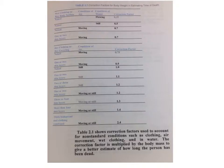In addition to the nomograph, we must also have a correlation table for body weight and estimations of time of death. This shows correlation factors used to account for non-standard conditions, such as clothing, air movement, or wet clothing and water. The correlation factor is multiplied by the body mass to give a better estimation of how long the person has been dead.